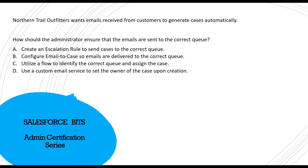If you configure email-to-case — option B — then emails can be delivered to the correct queue. When you configure email-to-case, you can select the required queues to route cases to. So B is the right answer for this question. Let me show you some reference material.